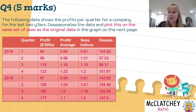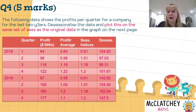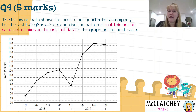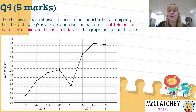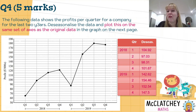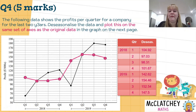Going back to the original question: we need to plot this information on the same set of axes as the original data. We'll take the profit-in-thousands column and the de-seasonalised data and plot both on the graph. QCAA kindly already graphed the original data, shown with the black line. We now add the de-seasonalised points, starting with 104.92 and adding each subsequent value to the graph.